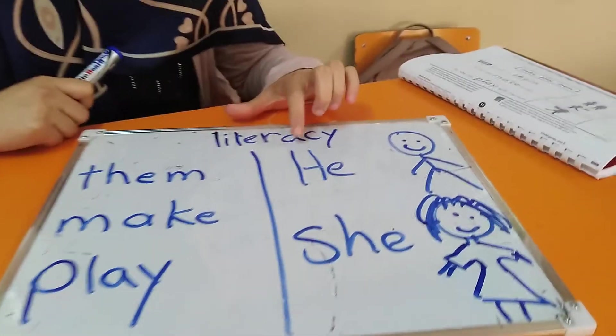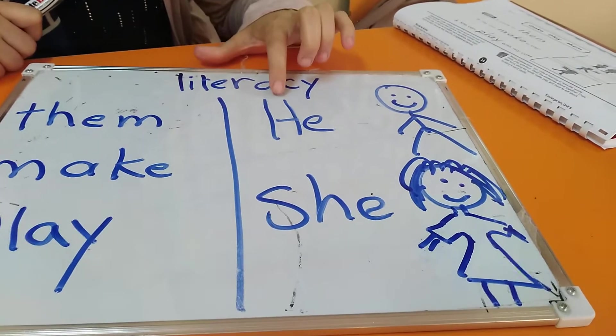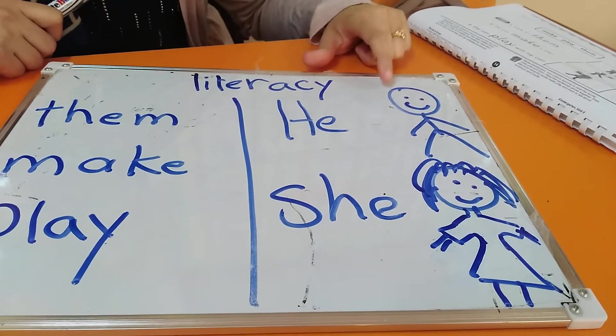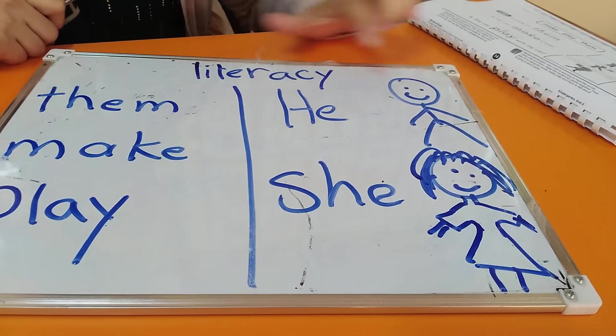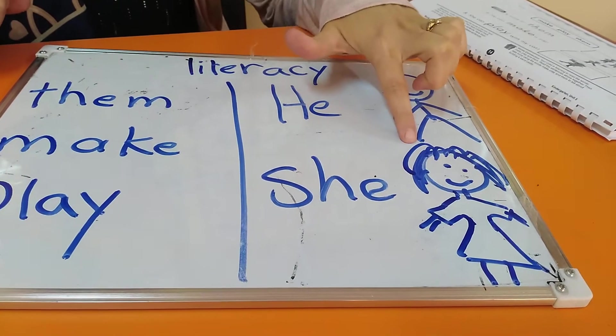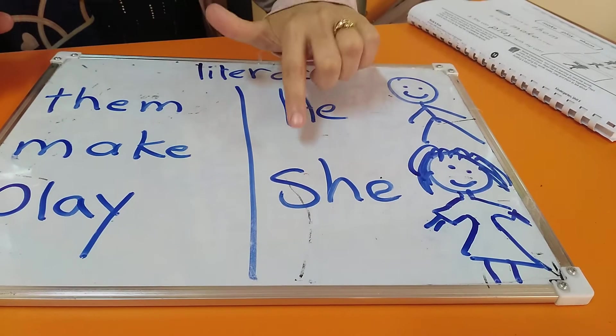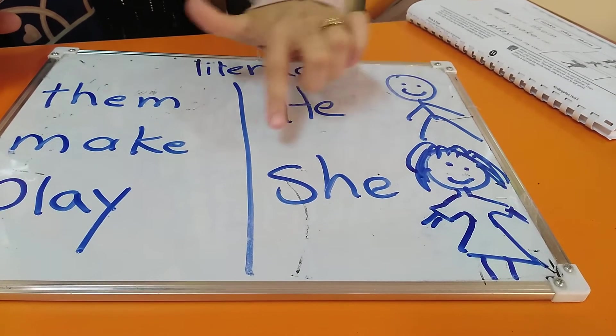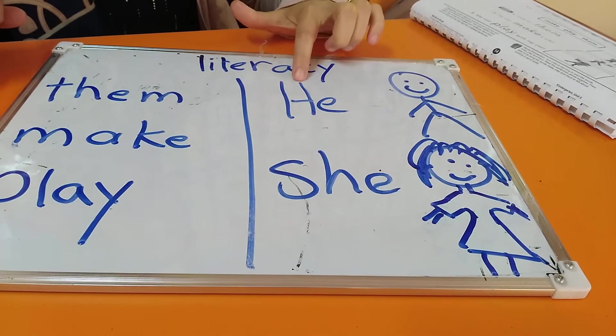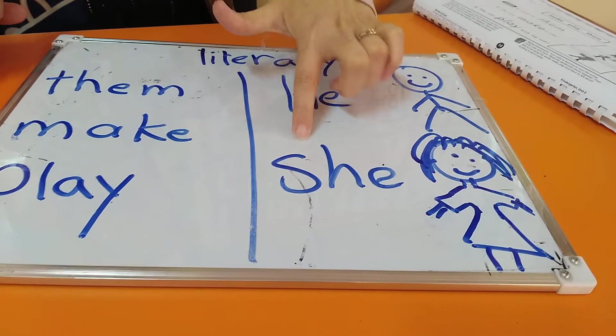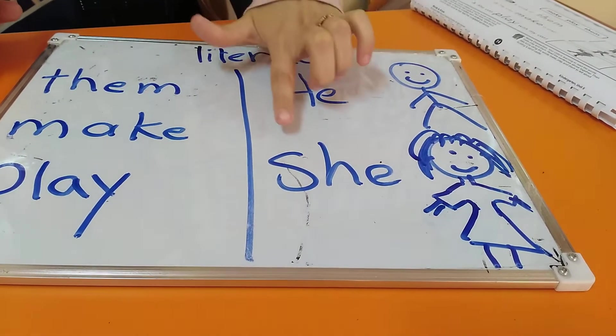And here, what can you see here? Some of you will say, he. Excellent. When I point to a boy, I say, he. Okay. And when I point to a girl, I say, she. She, she, she.